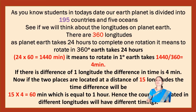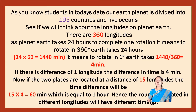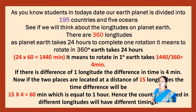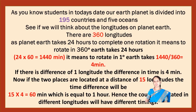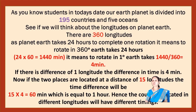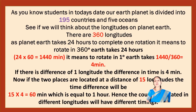If there is a difference of 1 longitude, the difference in time is 4 minutes. Now, if two places are located at a distance of 15 longitudes, the time difference will be 15 multiplied by 4, equal to 60 minutes — which is equal to 1 hour. Hence, countries located at different longitudes will have different timings.